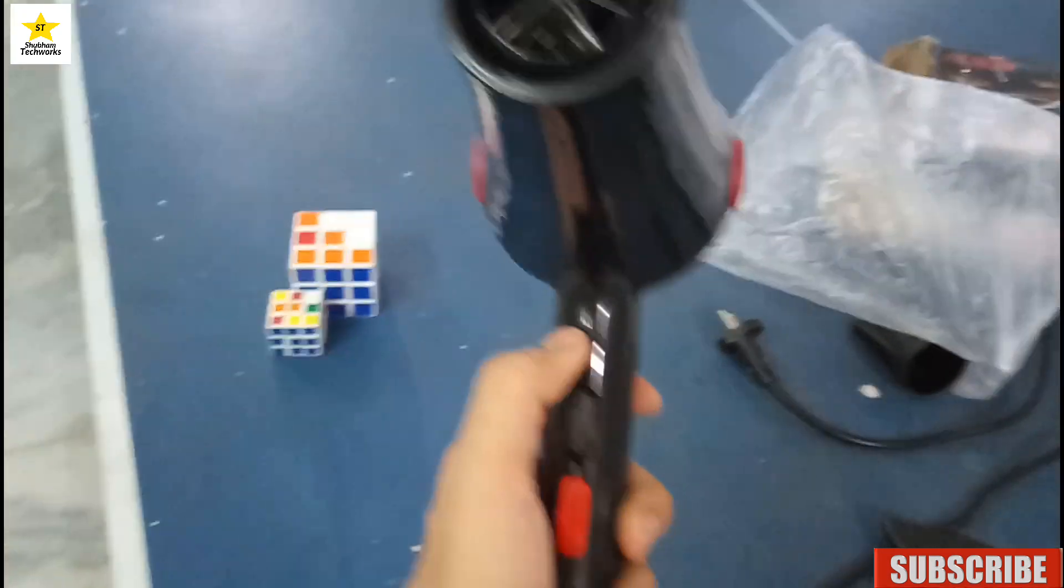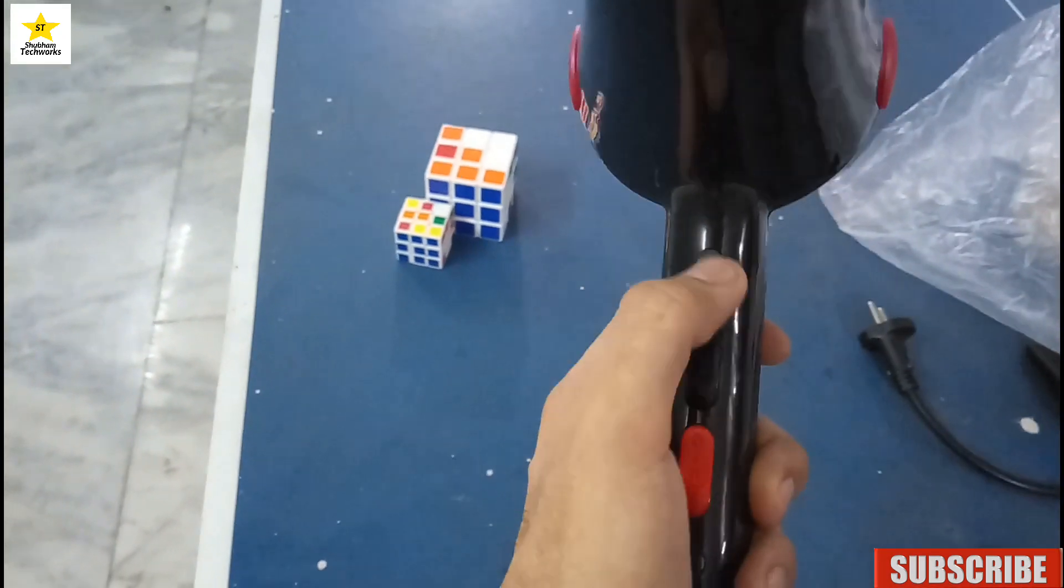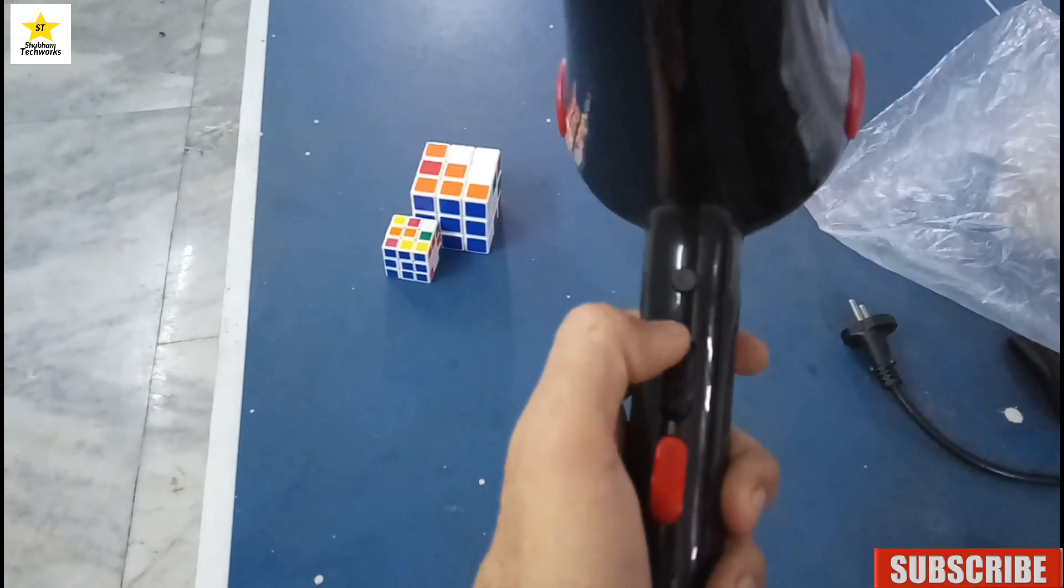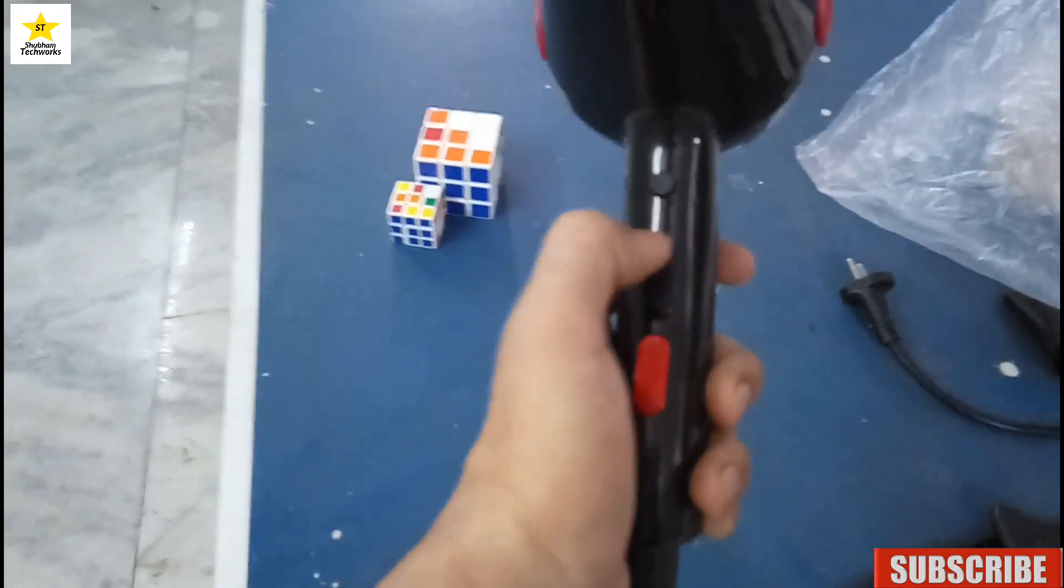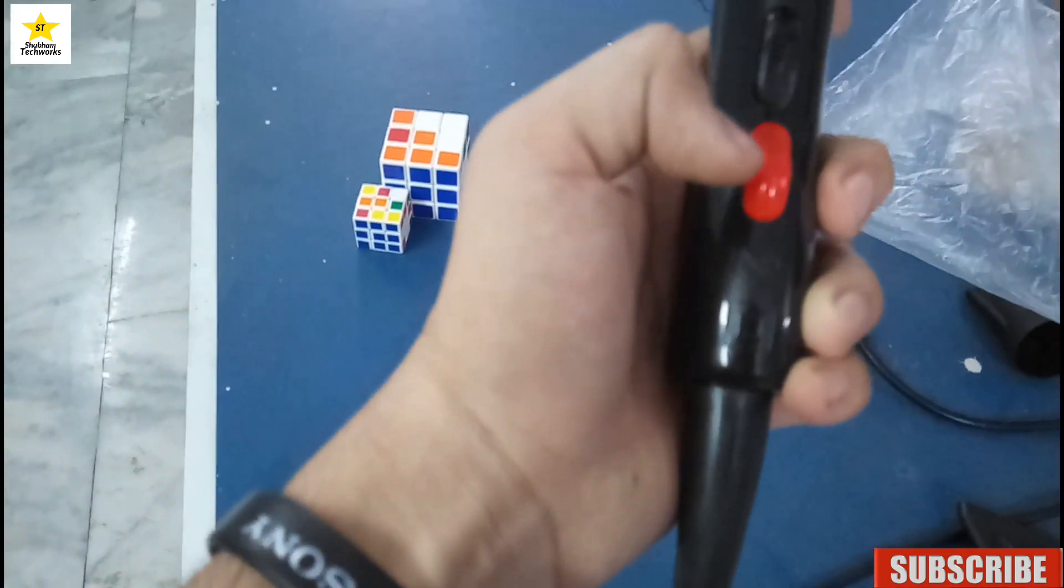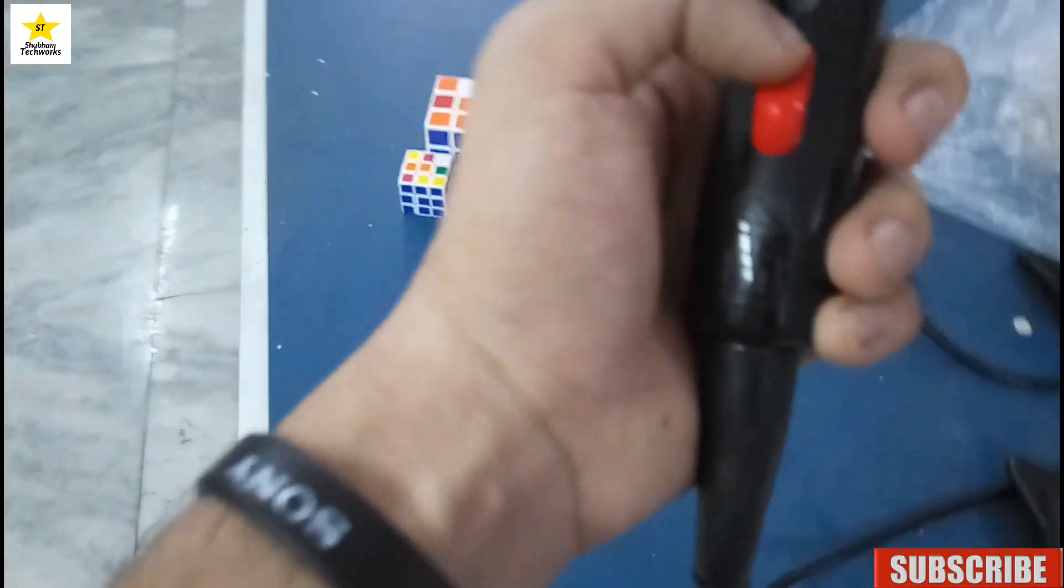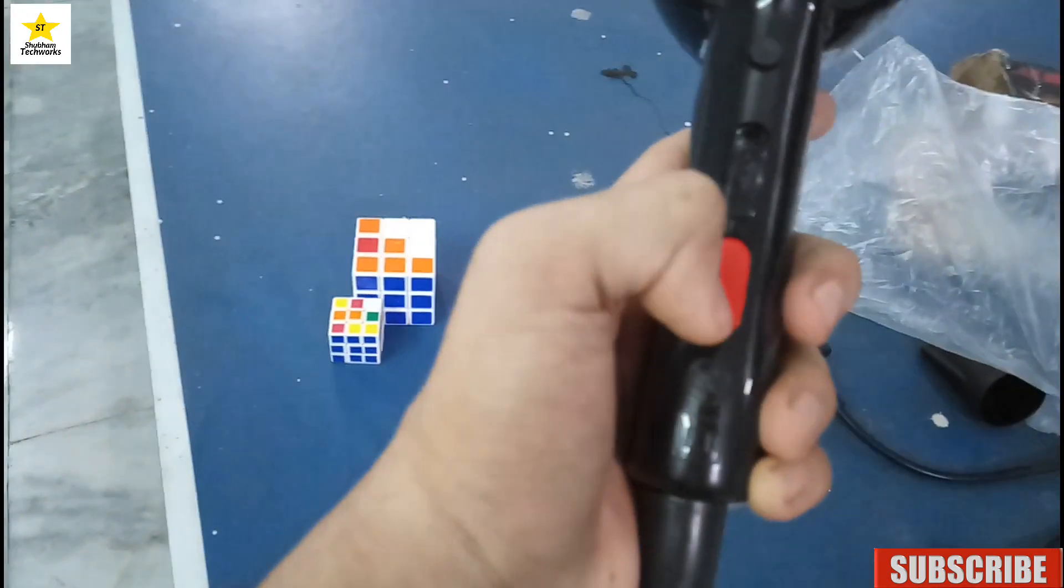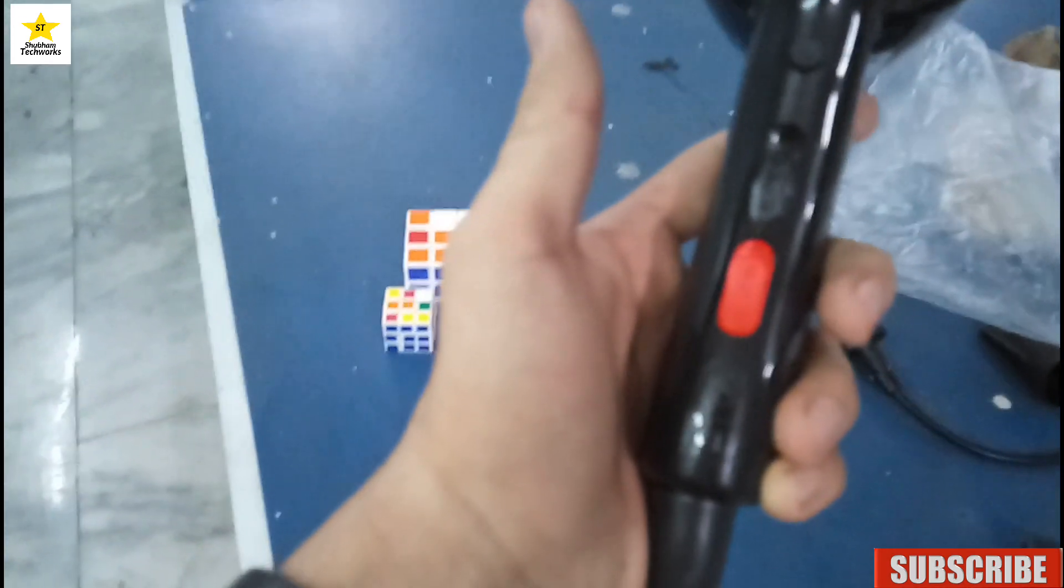This first button is cool air. This second button is airflow. This is minimum airflow. This is maximum airflow. This red button is heat. This is minimum heat. This is maximum heat.